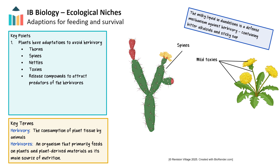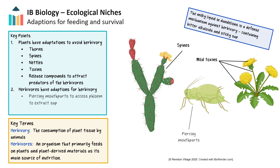Herbivores have adaptations for herbivory, including piercing mouthparts that allow them to penetrate plant cell walls to access the phloem and extract sap. Some organisms have developed poison resistance and the ability to metabolize toxic compounds they consume. For instance, milkweed produces a toxic compound, but monarch caterpillars have adapted to digest it.